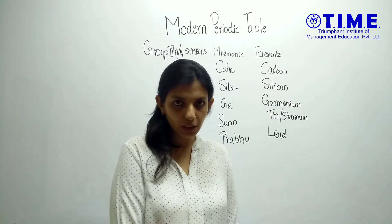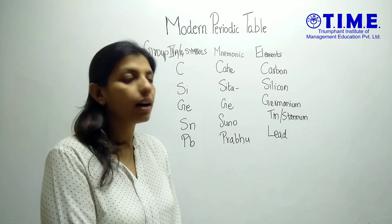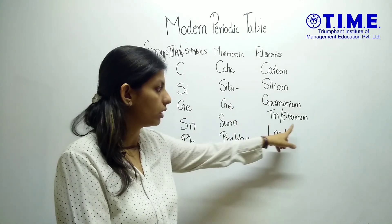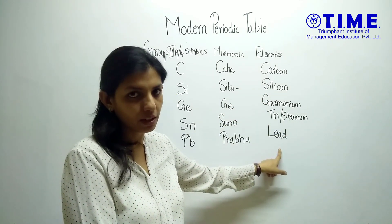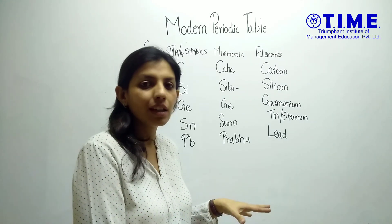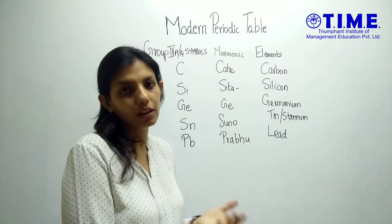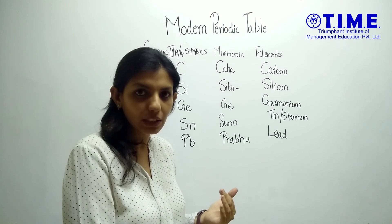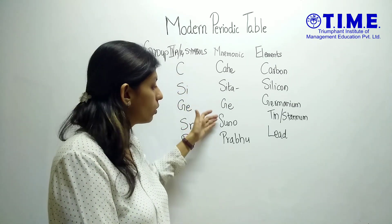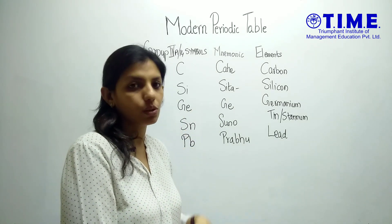Now let's look at the elements of Group 14 or 4A. The elements in this group are carbon, silicon, germanium, tin (or stannum) and lead. The mnemonic is slightly religious but if you're not comfortable you can easily change it and build your own: 'Kahe Sita ji, suno Prabhu.' This will help you learn the elements of Group 14.